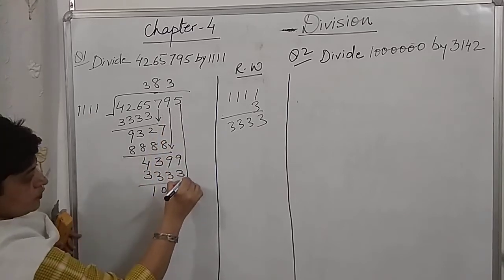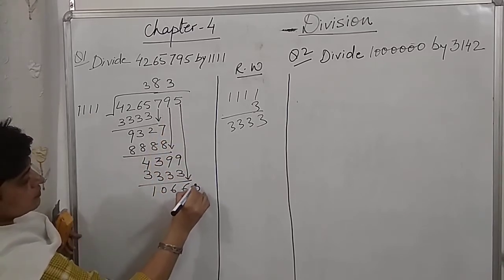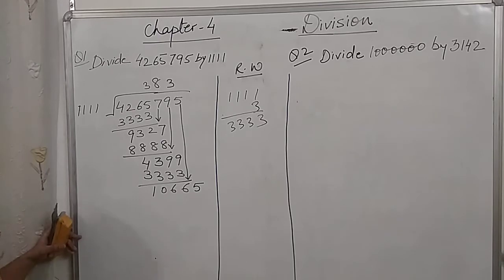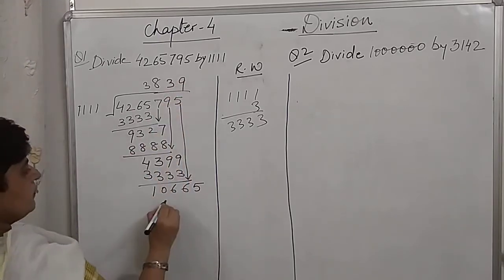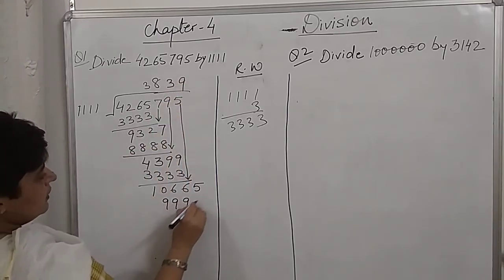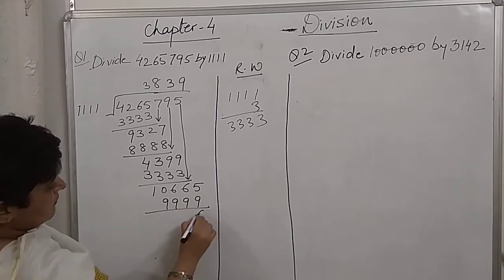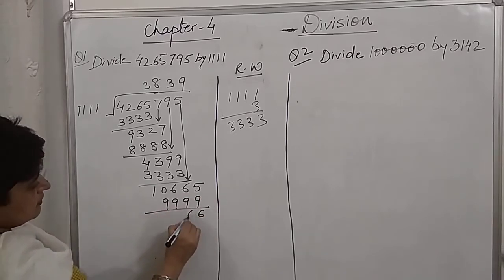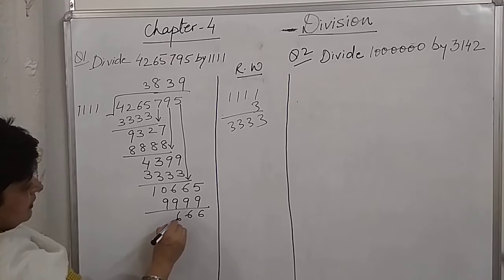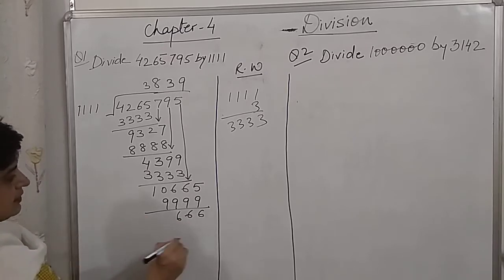So in the next step, we will be taking down this 5. And this will go with 9, 9, 9, 9, 9. 6. 15 minus 9, 6. 15 minus 9, 6. That's it.